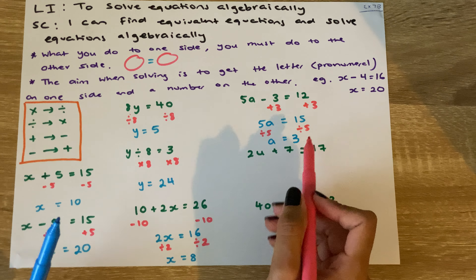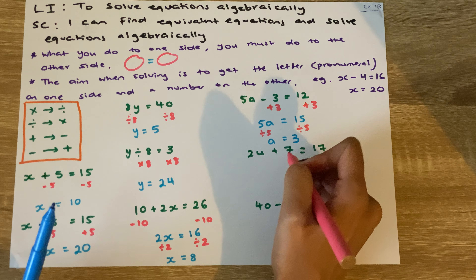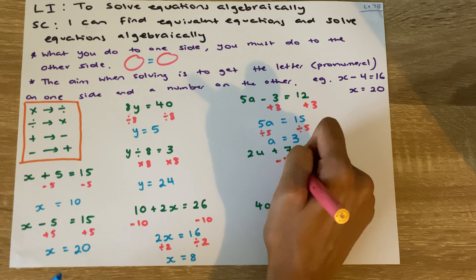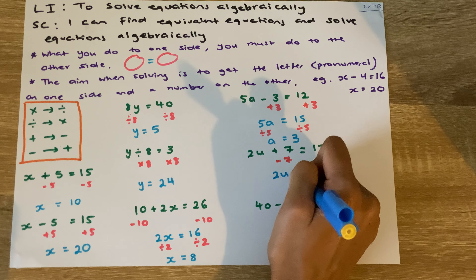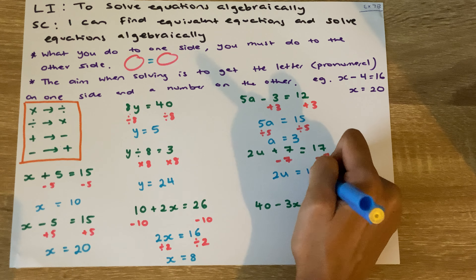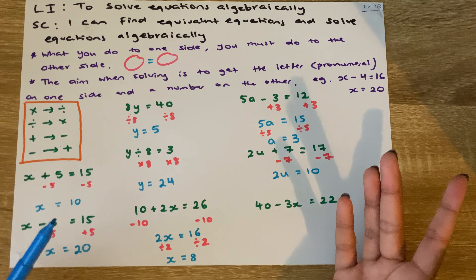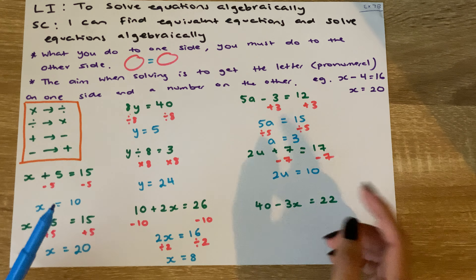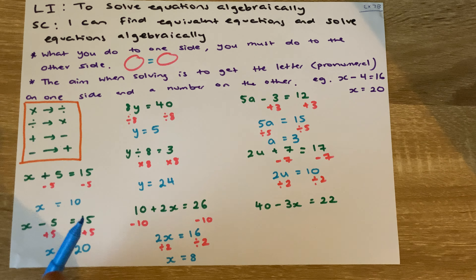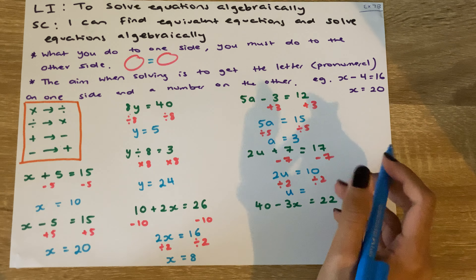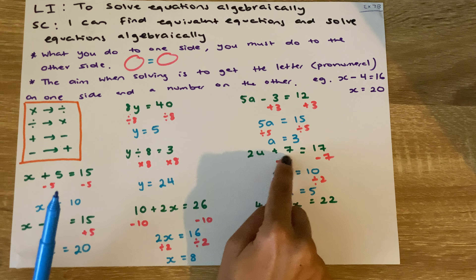Next: 2u plus 7 equals 17. We want to get rid of whatever's not with u first — that's the 7. The opposite of plus 7 is subtract 7, so we subtract 7 from both sides, leaving 2u. And 17 take away 7 is 10. So 2u equals 10 — the opposite of timesing is divide, so we divide both sides by 2, giving u equals 5. Checking: 2 times 5 is 10, and 10 plus 7 is 17. Correct.